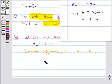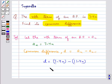Thus we have the common difference d is equal to a_n, that is 7-4n, minus a_(n-1), that is 11-4n. So this is equal to 7-4n minus 11 plus 4n. Now this minus 4n plus 4n gets cancelled and we are left with 7-11, which is equal to -4.